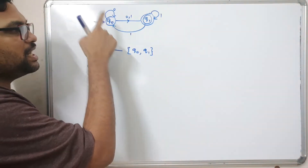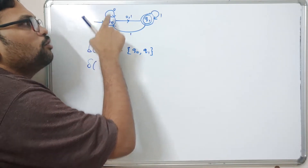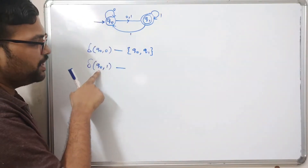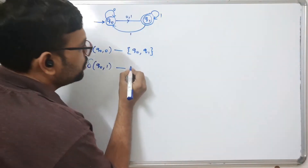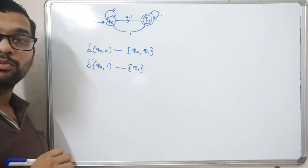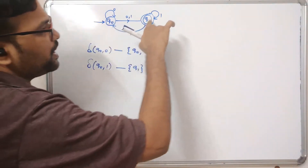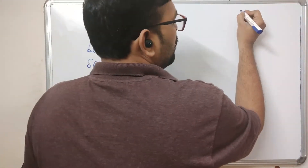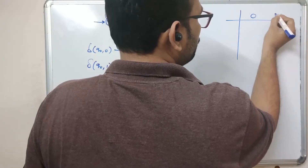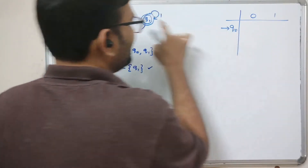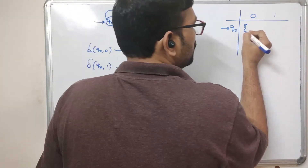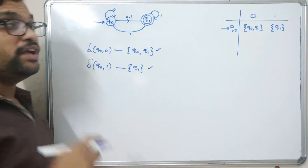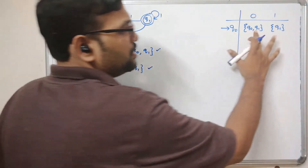Taking q0 as the initial state, I'm finding the transition of q0 over zero and one. q0 on zero is completed. Now finding q0 on one — q0 will change to q1, so this is one more state. Now we have two more states. I'll write the transition table starting with just the initial state q0. q0 on zero gives {q0, q1} and q0 on one gives q1. We need to find transitions for each of these new states.